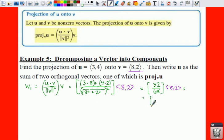This would be 8 over 17 times your vector ⟨8,2⟩, which means your projection is going to end up being 8 times 8 is 64. You're going to get 64 over 17 comma 16 over 17. So that is your projection.